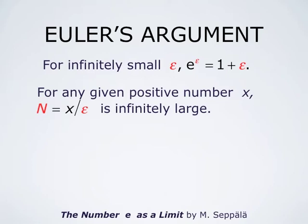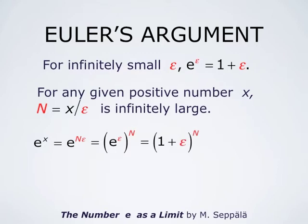Then, for any given positive number x, n, which is x divided by epsilon, is infinitely large. n is also not an ordinary number — it is a quantity which is infinitely large, which is why it has been printed in red. e to the x is e to the n times epsilon, which is e to the epsilon raised to the power n. And e to the epsilon is 1 plus epsilon, so this is 1 plus epsilon raised to the power n. But epsilon is x over n, so this is 1 plus x over n, raised to the power n.